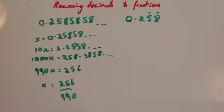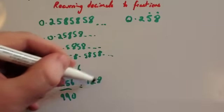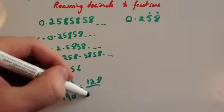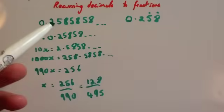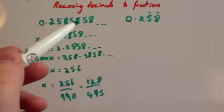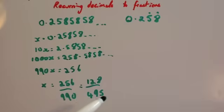Now simplify: cancel 256/990 down by dividing both by 2, and you get 128/495. So 0.2585858... equals 128/495.